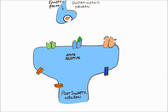Topiramate binds to the glutamate site of the AMPA receptor without causing the channel to open. When glutamate is released from glutaminergic neurons after stimulation by an epileptic focus, it travels across the synaptic cleft but cannot bind to the glutamate site on the AMPA receptor as it is blocked by topiramate. Therefore, the action potential from the epileptic focus cannot advance, stopping a seizure from developing.